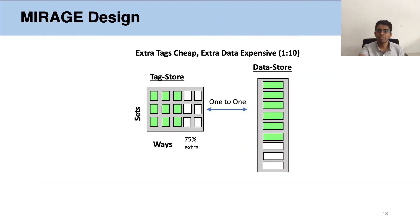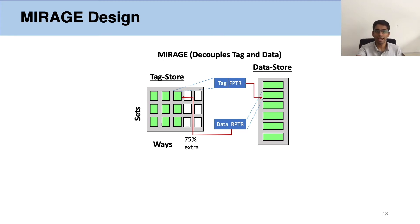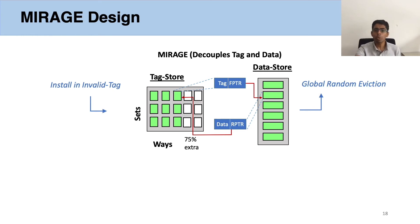Now that we know the security benefits of over-provisioning the cache and power-of-two-choices indexing, let's see how we enable these features practically in Mirage. In a traditional cache, there is a one-to-one correspondence between entries of the tag store, which stores the metadata, and the data store, which stores the actual data. To over-provision entries inexpensively, we notice that extra tags are cheap but extra data is expensive. So Mirage decouples these two structures and uses pointers to associate tags with arbitrary data entries. This allows Mirage to only over-provision the tag store with extra invalid tags while retaining the same data store structure. If a new line is installed in such an invalid tag, it can be mapped to any random data store entry and evict any randomly selected line from the entire cache without a set-associative eviction.